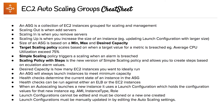Desired capacity is how many EC2 instances you want to ideally run. An ASG will always launch instances to meet the minimum capacity. Health checks determine the current state of an instance in an ASG, and health checks can be run against either an ELB or an EC2 instance.